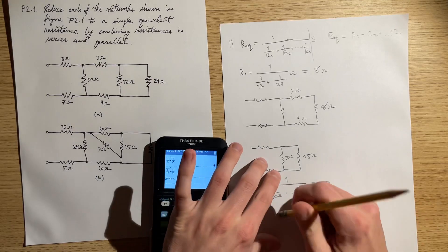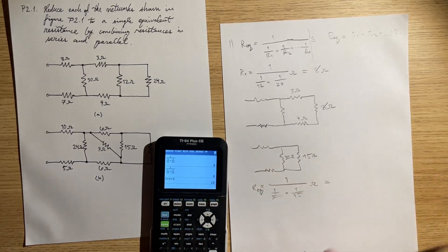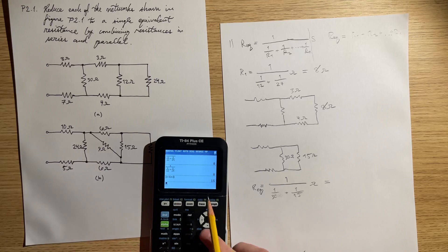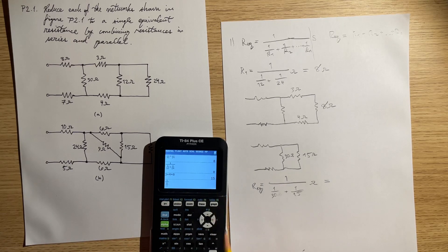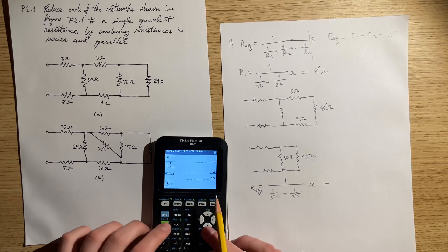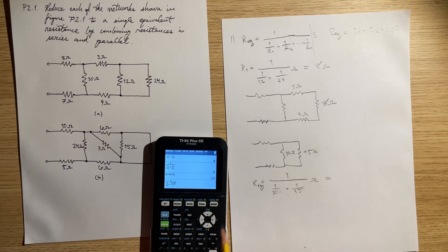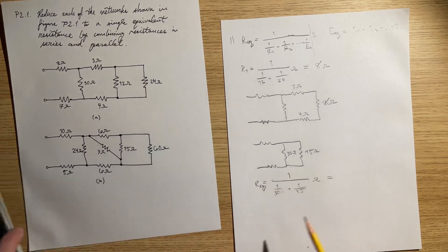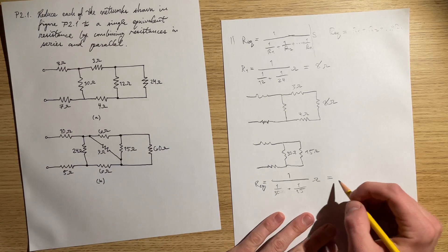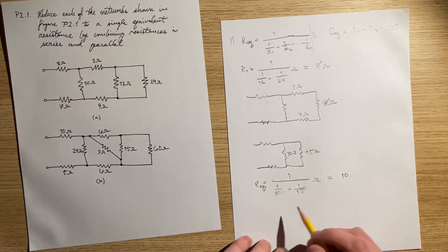1 over (1 over 30 plus 1 over 15) ohms. Calculator again, just going to erase that extra unit right there. 1 over 30 plus 1 over 15. That's equal to 10 ohms right there.